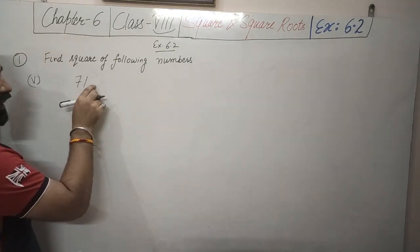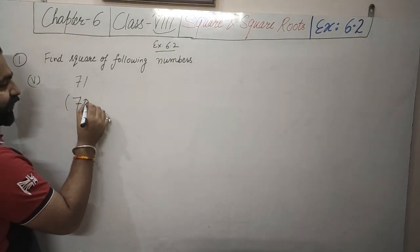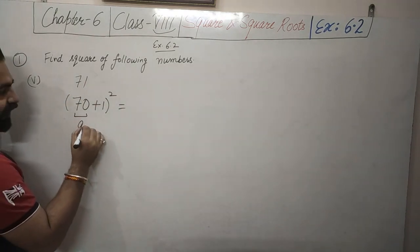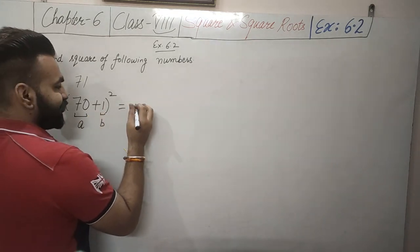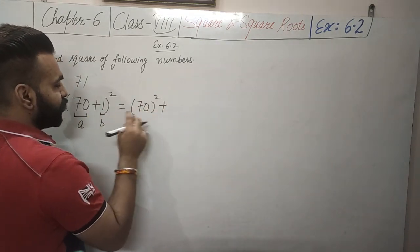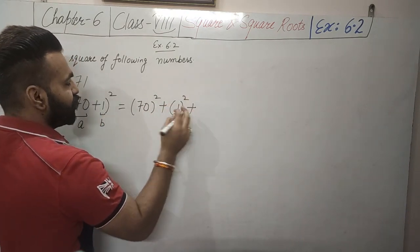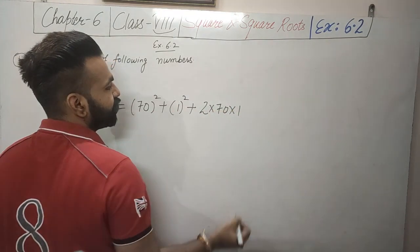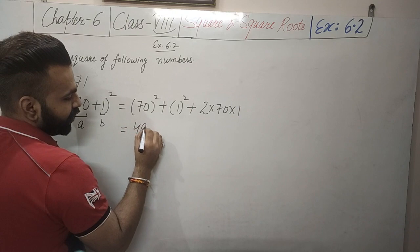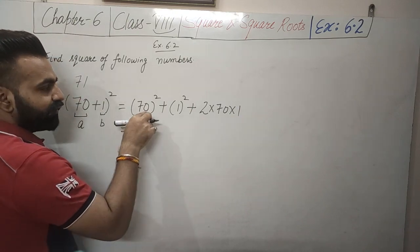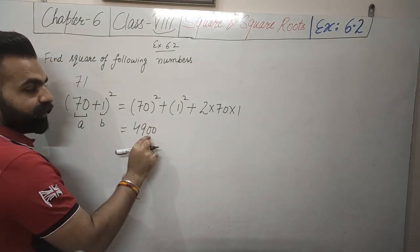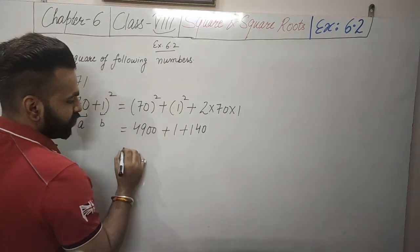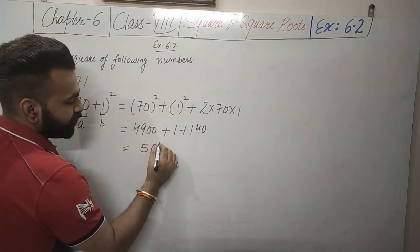Next part: 71 squared. We write 71 as 70 plus 1, so a is 70 and b is 1. This equals 70 squared plus 1 squared plus 2 into 70 into 1. Now 70 squared is 4900 (since 7 squared is 49, and the zero doubles on squaring), plus 1, plus 2 into 70 equals 140. So the answer is 5041.